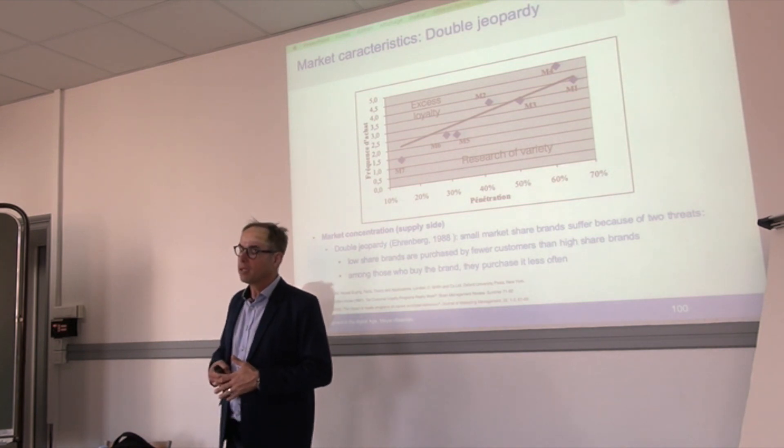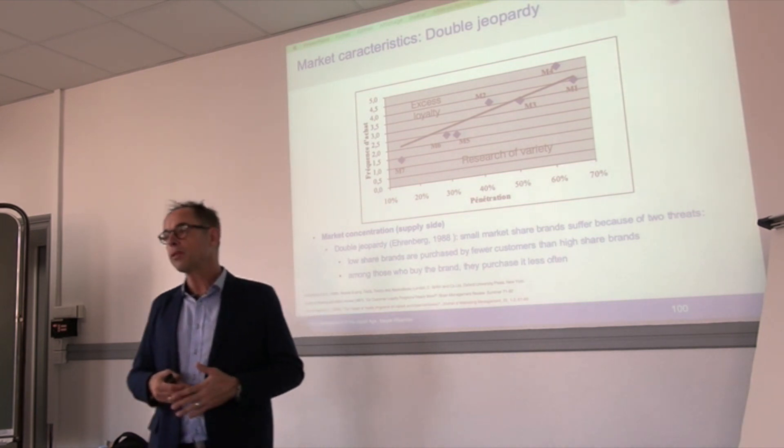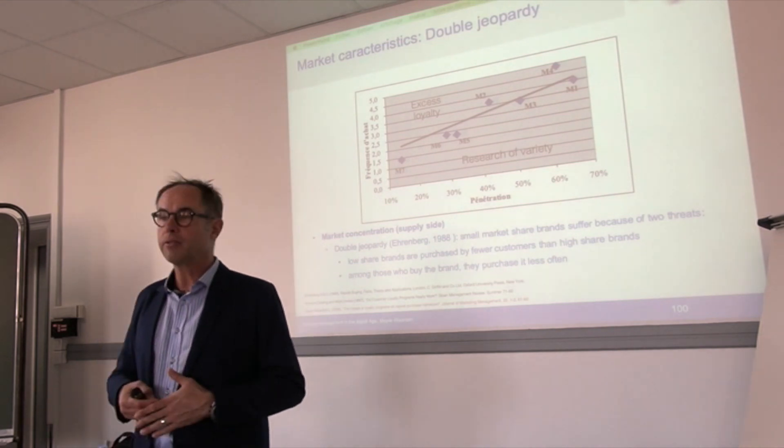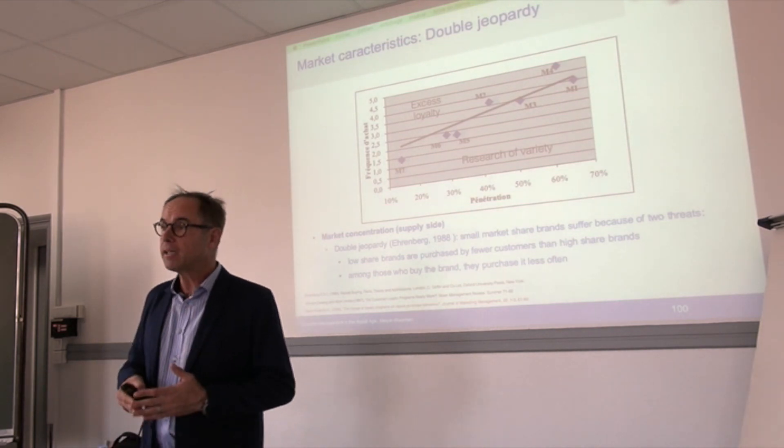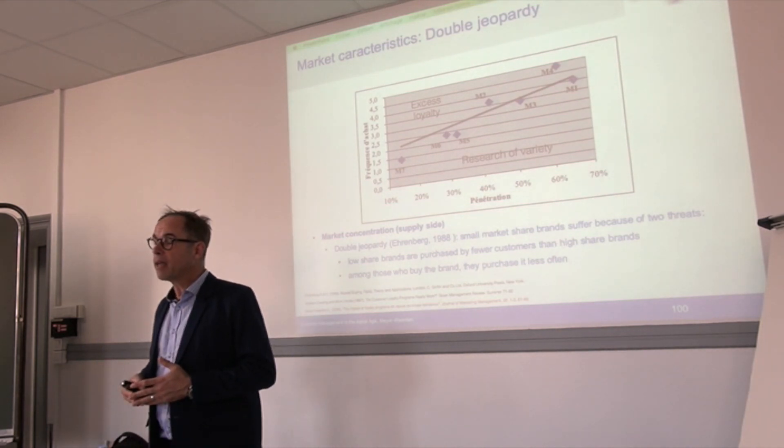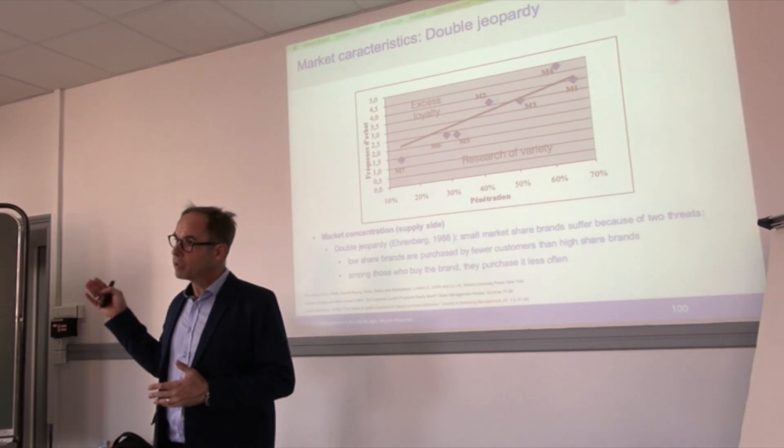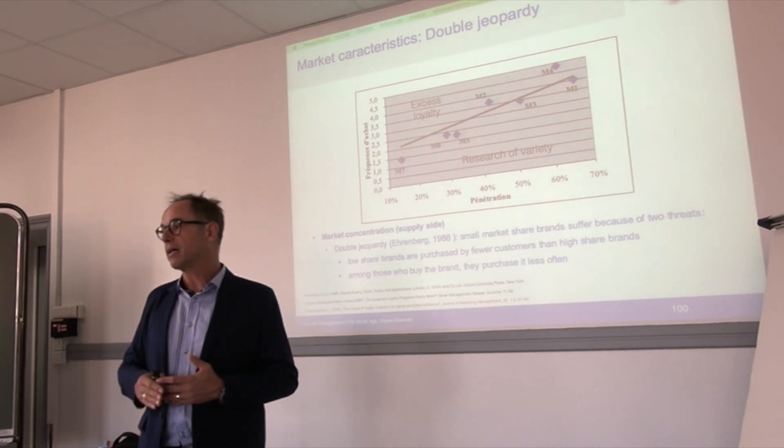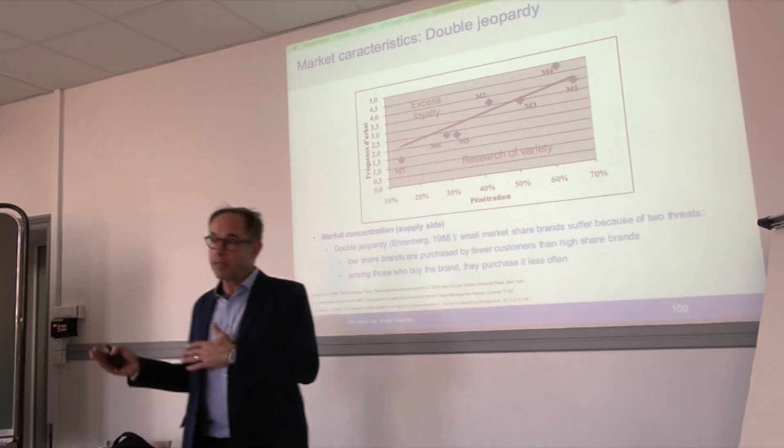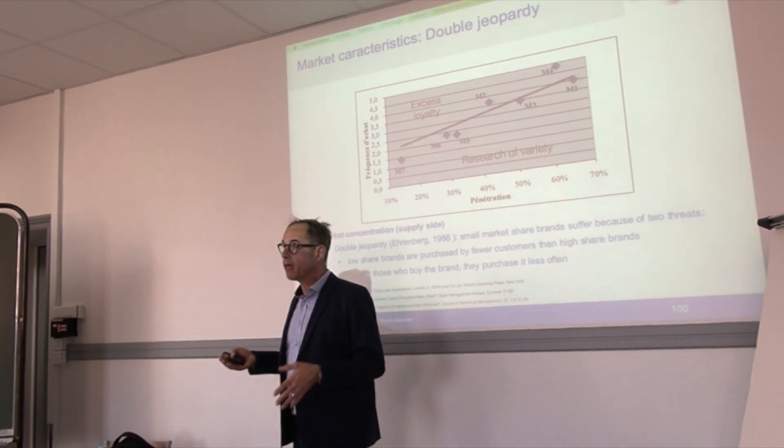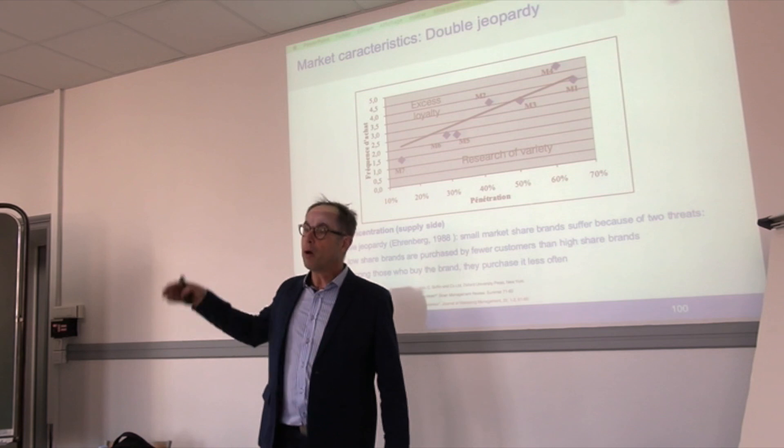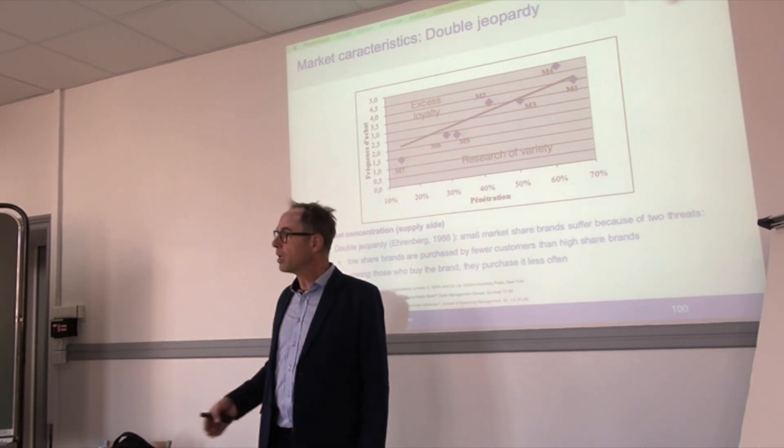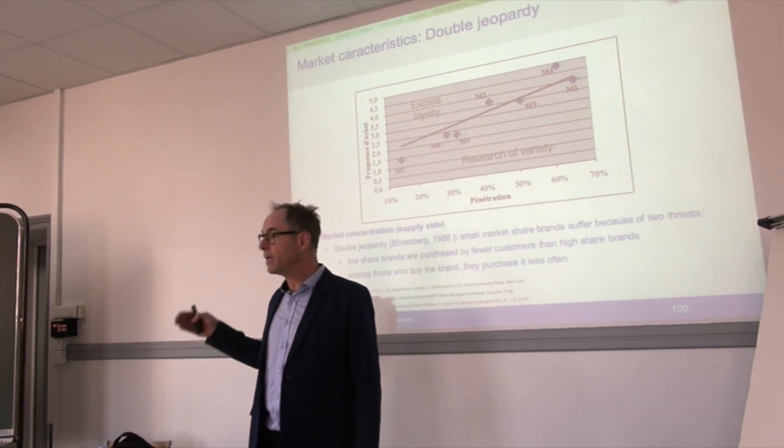In fast-moving consumer goods sectors, gasoline stations, sitcoms, movies, all kinds of markets - small brands have a double disadvantage because they have less buyers and these buyers buy less often or are less loyal. On the other hand, big brands have a double advantage. They have more buyers or more penetration, and these buyers are more loyal as they buy more often.